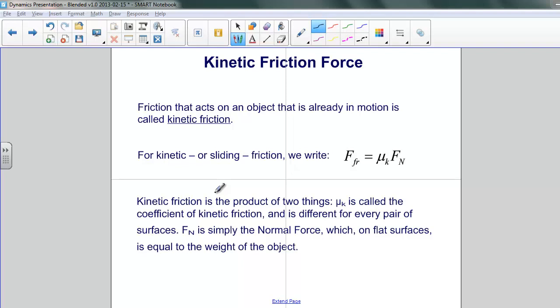Let's pay attention to the first one first. The first one, that of an object already in motion across another, is called kinetic friction, also known as sliding friction.